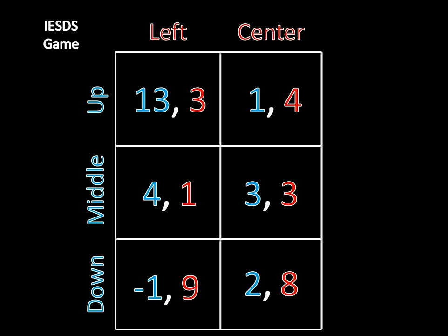Now Player 1 should be able to understand that Player 2 is super smart and respond accordingly. If Player 1 knows Player 2 is super smart, then Player 1 is going to infer that Player 2 will never play right. And that has an interesting implication: if Player 2 is never going to play right, should Player 1 ever play down? The answer is no, because middle now strictly dominates down. This 4 is greater than this negative 1 if Player 2 were to go left. And if Player 2 were to go center, then this 3 is greater than this 2. So regardless of whether Player 2 plays left or center — the only two reasonable strategies for her — Player 1 should never want to play down. Instead of looking at this bigger game, we should really be looking at this smaller game.